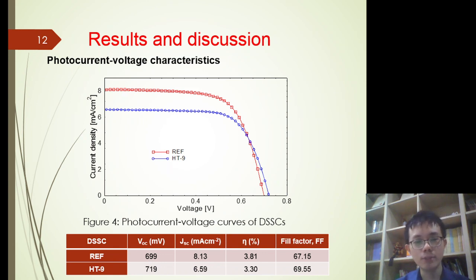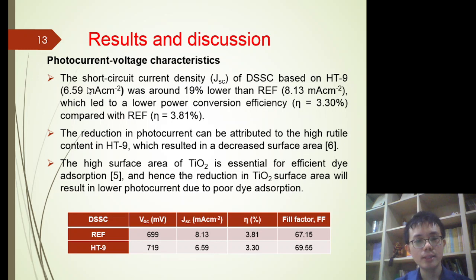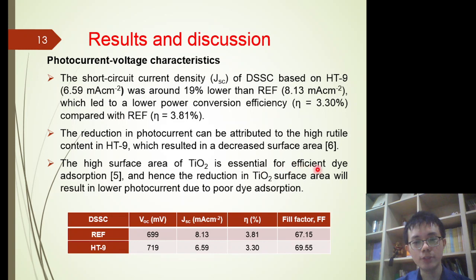Figure 4 shows the photocurrent-voltage curve of the DSSCs based on the fabricated titanium dioxide photoanodes, and the corresponding photovoltaic data is listed in the table below. From the IV measurement, the short-circuit current density of the DSSC based on HD9 was around 9% lower than the reference, which led to a lower power conversion efficiency of 3.3%, compared with the reference cell at 3.81%. The reduction in photocurrent can be attributed to the high rutile content of HD9, which resulted in decreased surface area. The high surface area of titanium dioxide is essential for efficient light absorption, and hence the reduction in surface area will result in lower photocurrent due to reduced dye adsorption.